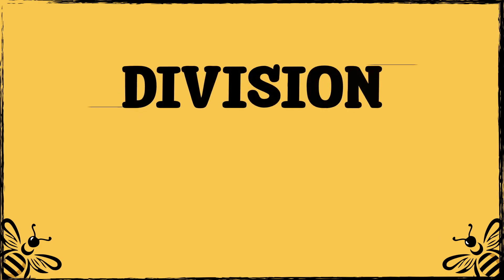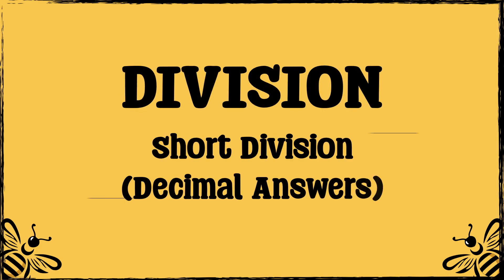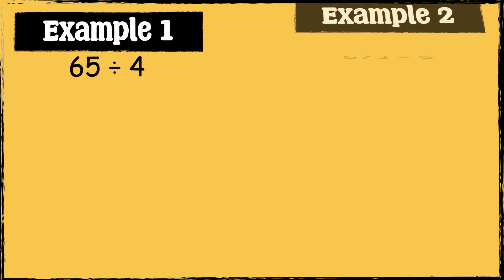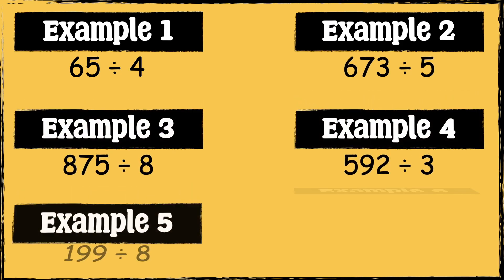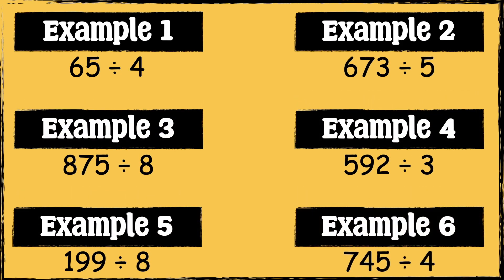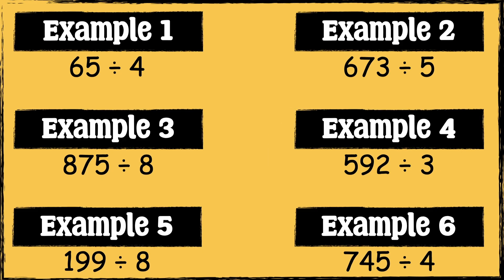In this video we'll be exploring short division and how to work out decimal answers. I'm going to work through six different examples. If you'd like to have a go at these examples yourself before we go through them, pause the video and press play when you're ready. Here's the first example: 65 divided by 4.